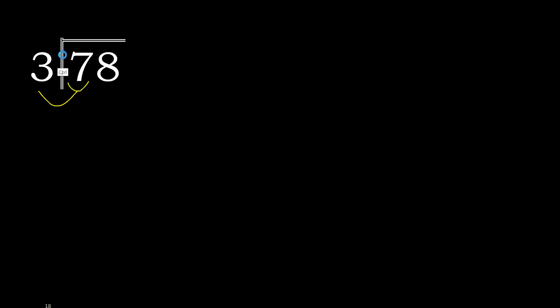3 multiplied by 3 is 9 — 9 is greater, therefore 2. 3 multiplied by 2 is 6. 7 minus 6 is 1.